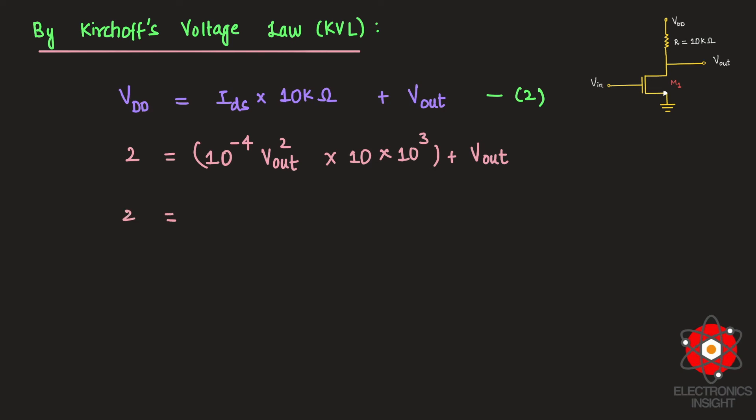Now just bring all the terms together. So 10⁻⁴ here we have 10⁴. So these terms get cancelled. So I get Vout² plus Vout.